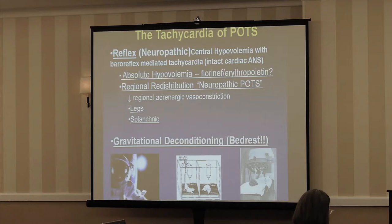Another group has regional redistribution — too much blood goes to the legs, which was the first description of neuropathic POTS published in the New England Journal by Jacob et al. from Vanderbilt. Then there's a group of patients who seem to pool in the gut. Interestingly, we also see pooling in the gut in fainters, so the initial physiology is very similar. Lastly, I include gravitational deconditioning.